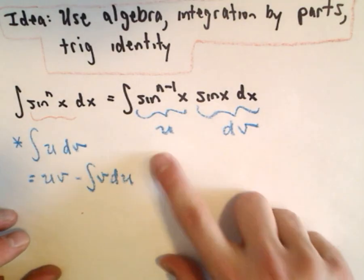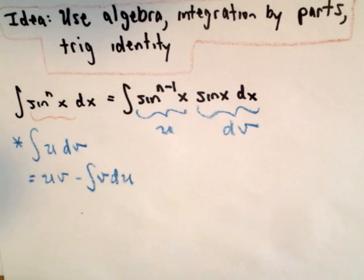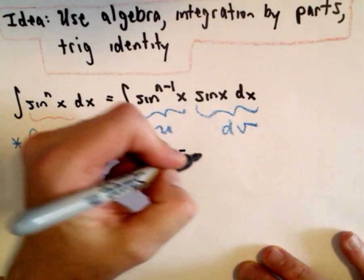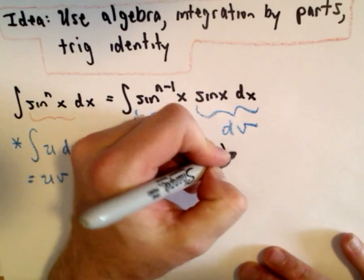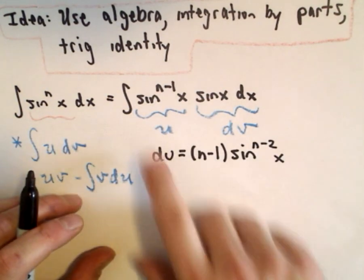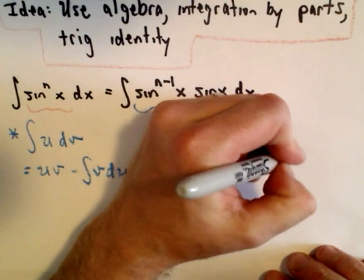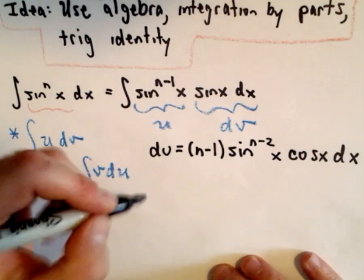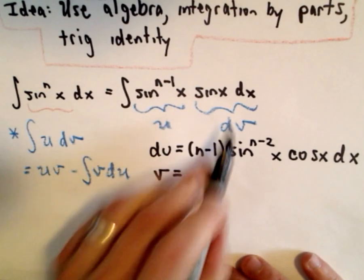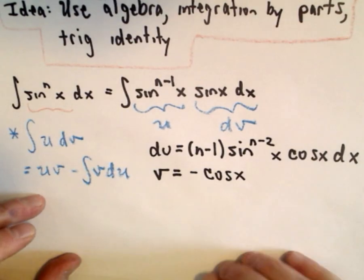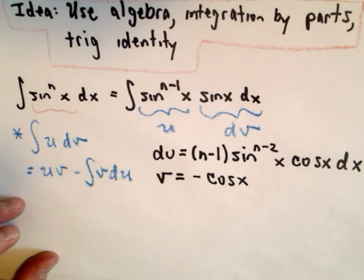So if this is my u and this is my dv, we have to calculate du and we have to calculate v. To get du we just take the derivative: the (n minus 1) comes out front, we take one away from the exponent leaving (n minus 2), and using the chain rule the derivative of sine x gives us cosine x, so du = (n-1) sin^(n-2)(x) cos(x) dx. Since dv = sin(x) dx, we integrate to get v = negative cosine x.